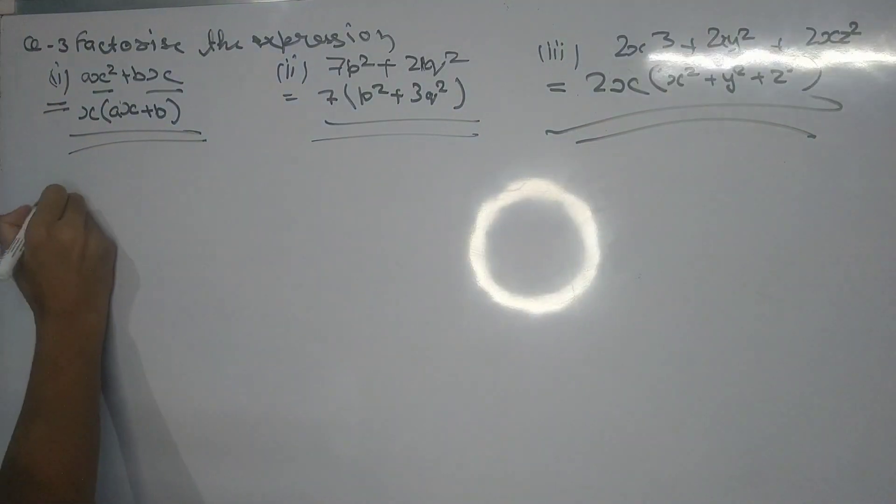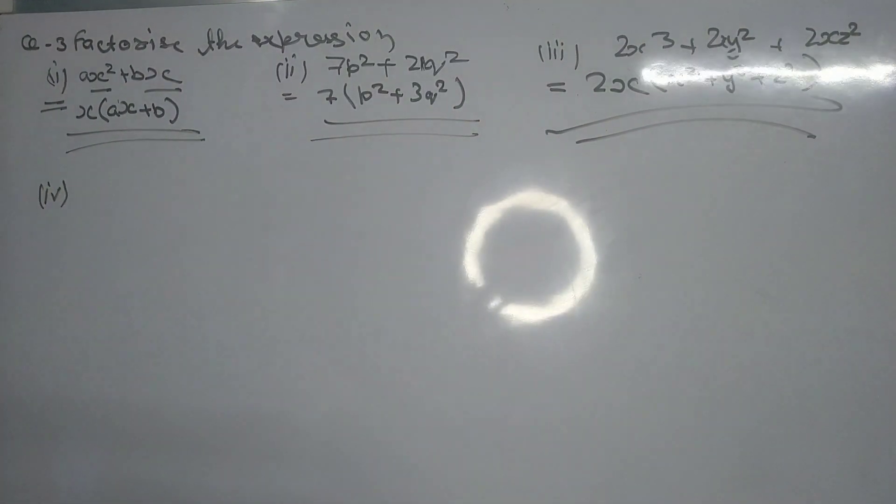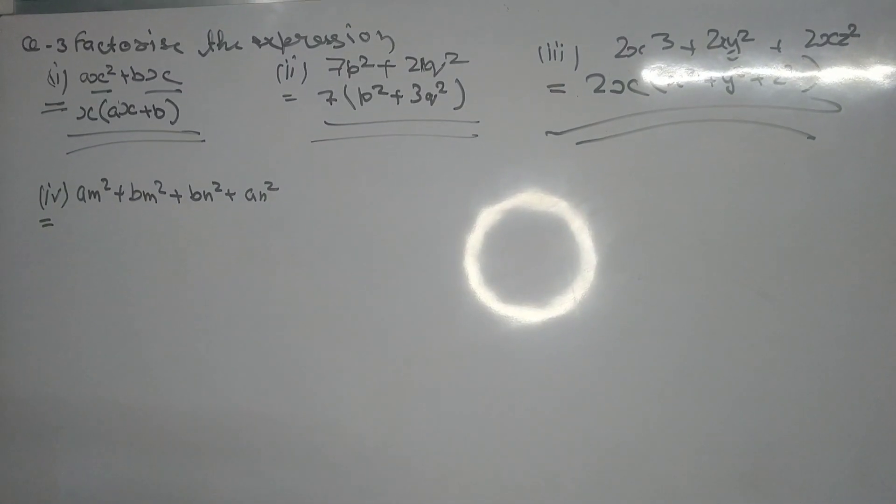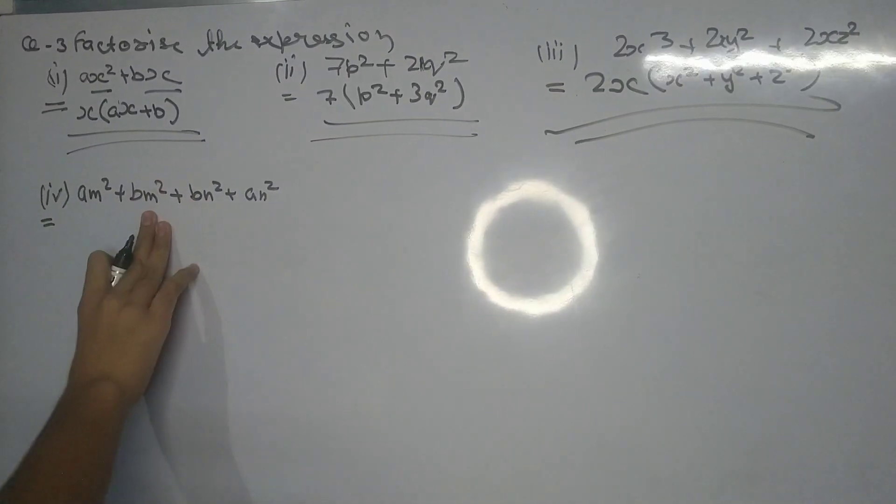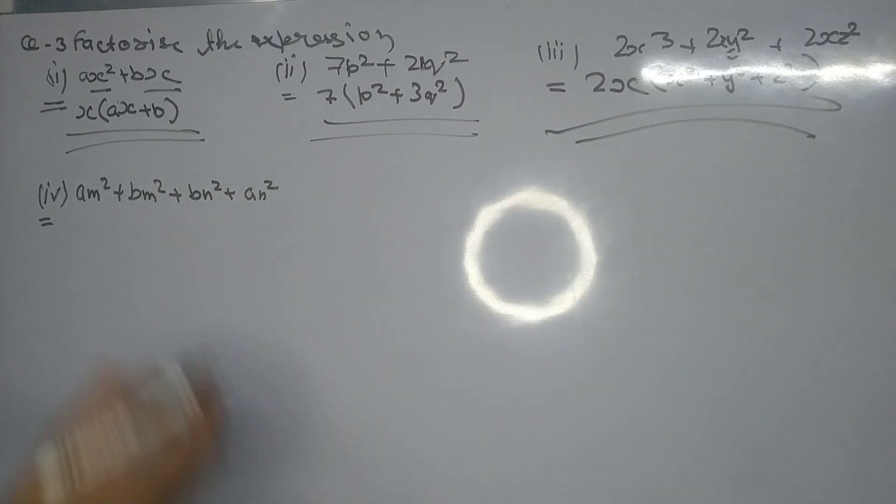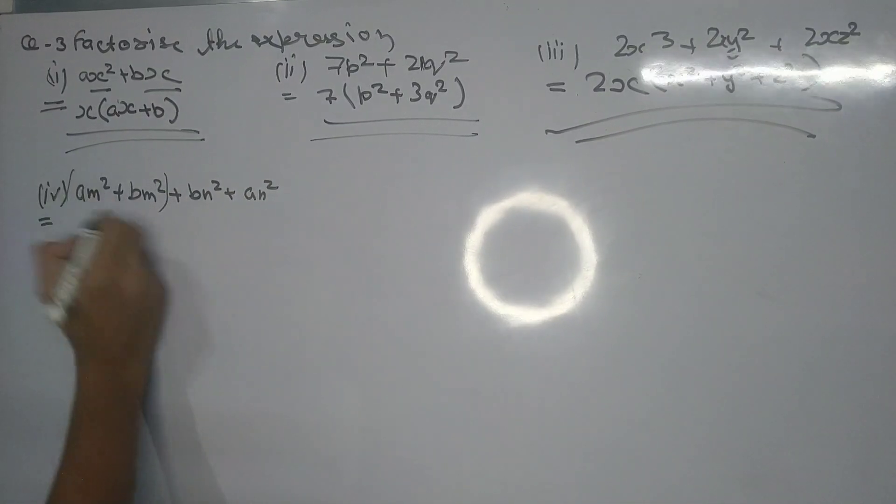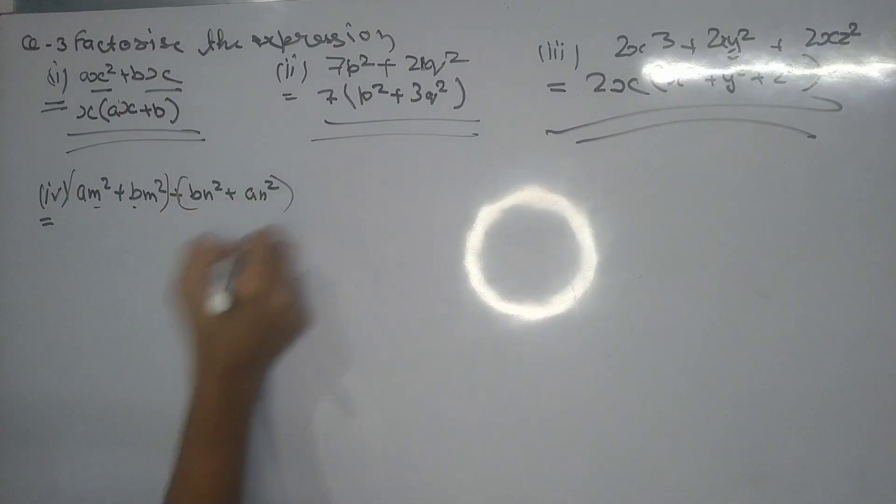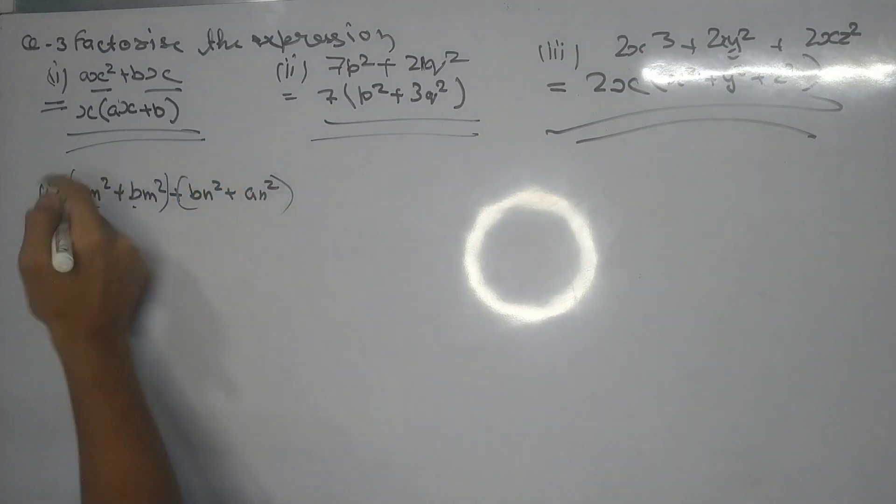In part (iv) we have am squared plus bm squared plus bn squared plus an squared. You can see in the first two terms m squared is common, and in the last two terms n squared is common. So we write m squared times (a plus b) plus n squared times (a plus b).